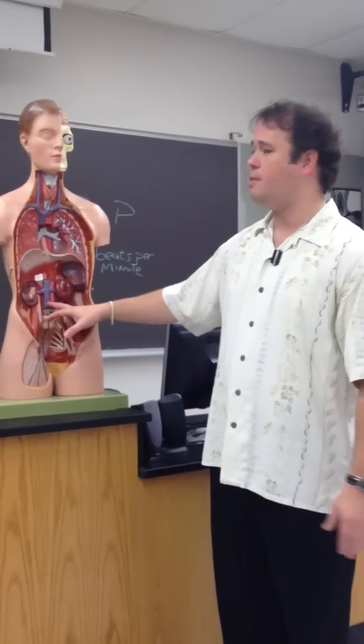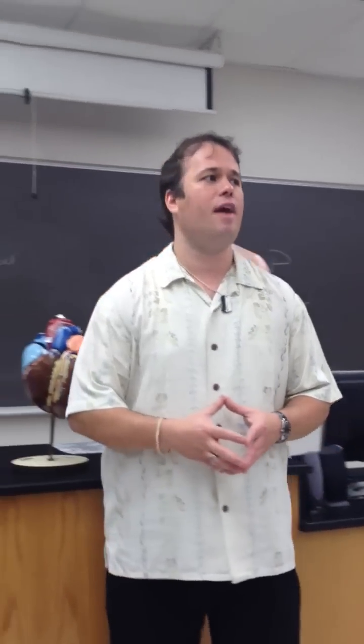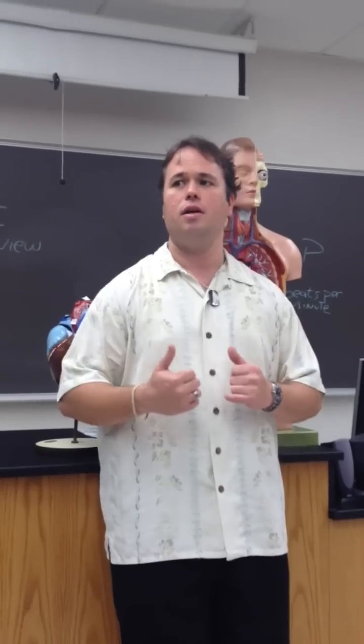Our common iliac veins are going to come together and form the inferior vena cava. The veins of the lateral abdomen are different on the left and the right. The right side goes directly into the inferior vena cava: right gonadal to inferior vena cava, right lumbar to inferior vena cava, right renal to inferior vena cava, right adrenal to inferior vena cava.